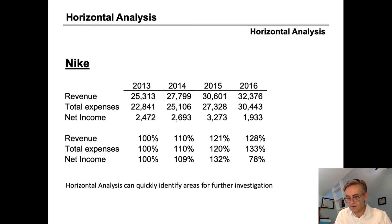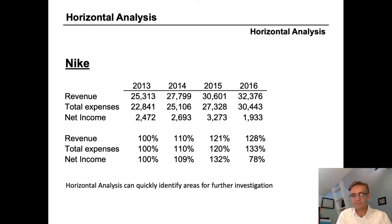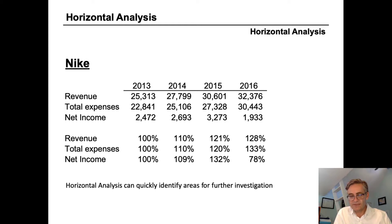Here's what we get. Each line is calculated the same way by holding the base year constant and expressing each subsequent year as a percentage of the base. So what does this tell us? We can very quickly identify that for Nike, while revenue in 2016 is 128 percent of what it was in 2013, expenses are 133 percent of 2013. This is a problem.